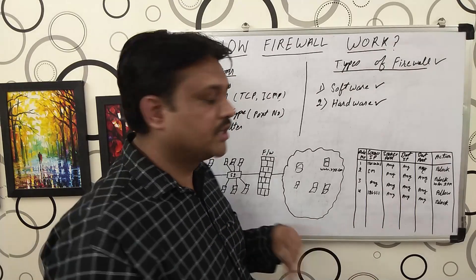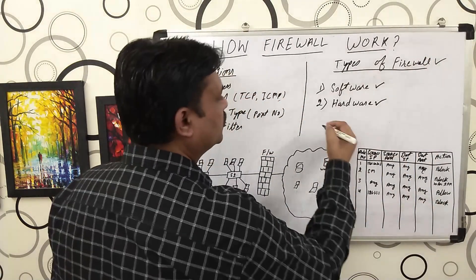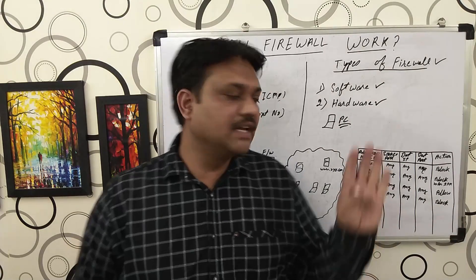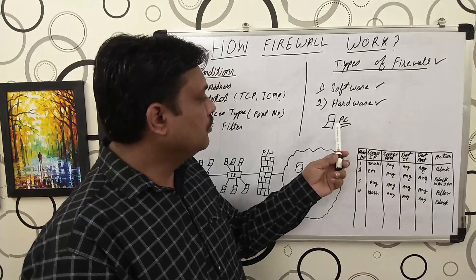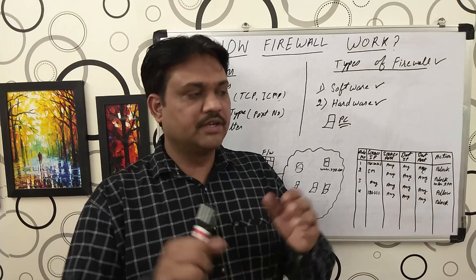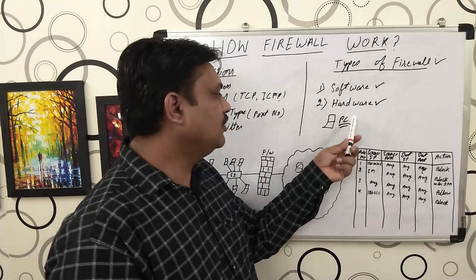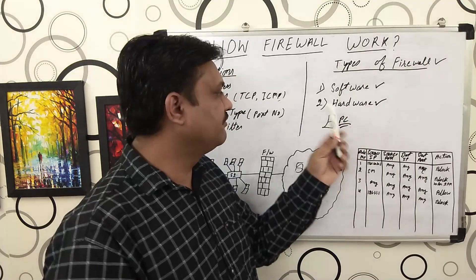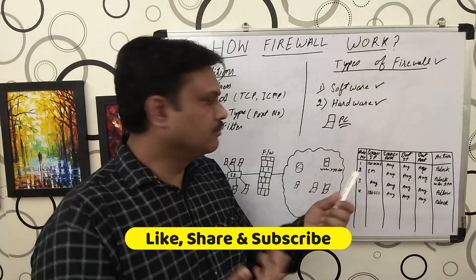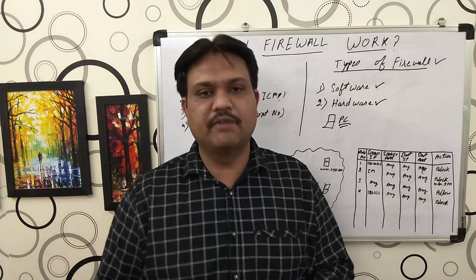What is a software firewall and where is it installed? Say for example you have a single PC at your home. In your PC, by default a software firewall is available whether it is Windows 7, 8, 10, or server. By default, with the operating system, some firewall features are pre-installed so that you can secure your computer from attacks.